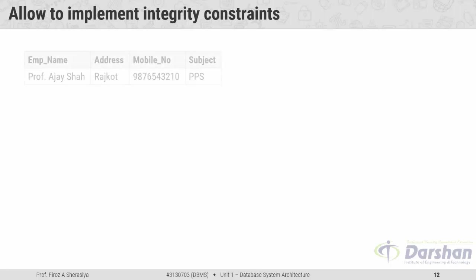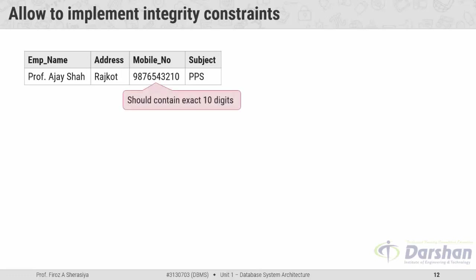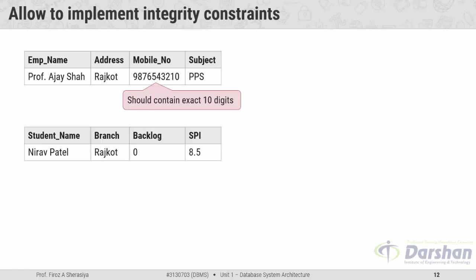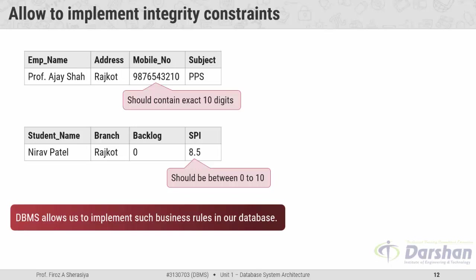Next, the fifth advantage: allow to implement integrity constraints. An integrity constraint is nothing but business rules. For example, suppose a table has employee name, address, mobile number, and subject. Here, the mobile number should contain exactly 10 digits — until the user enters 10 digits, they should not proceed further. Another example: a student's table with student name, branch, backlog, and SGPA — we want to implement that the value of SGPA should be between 0 to 10. This type of business rule facility is available in a database management system.